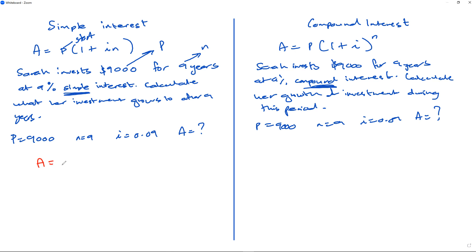Okay, so A = P(1 + i·n). Now all I'm going to do is substitute carefully. 9,000 goes into P, i is 0.09, and n is 9. All of this goes into a calculator. Let's see: 9,000 × (1 + 0.09 × 9) = $16,290.